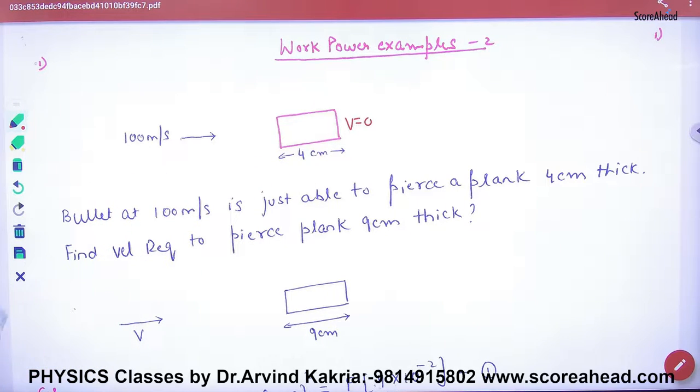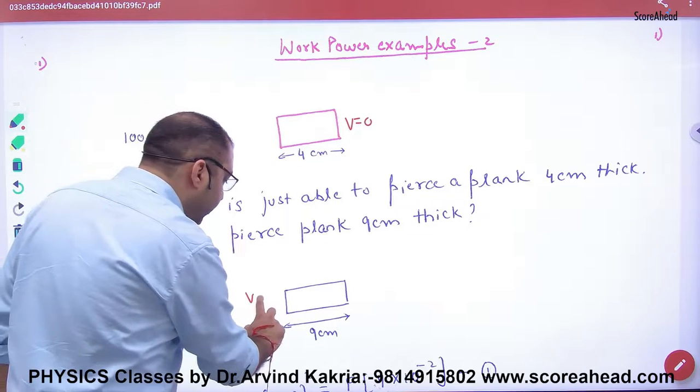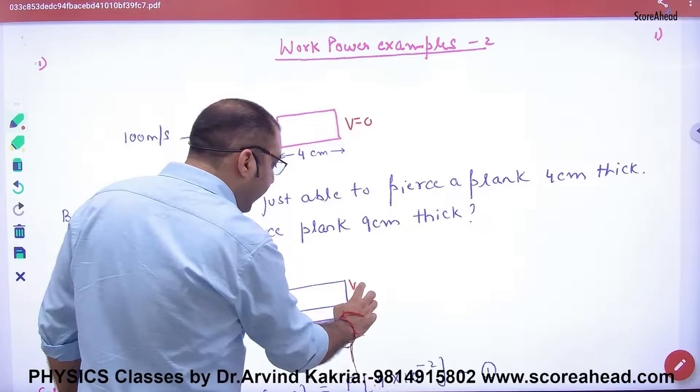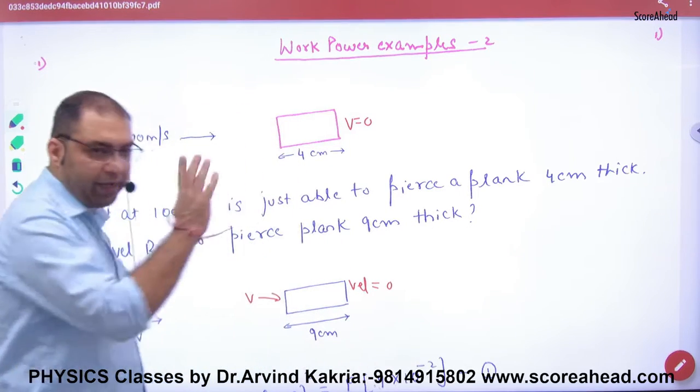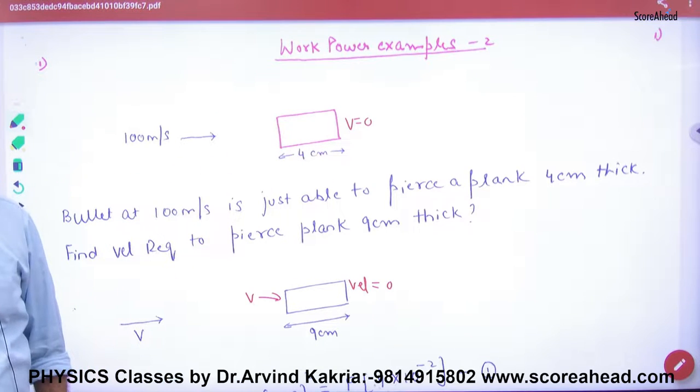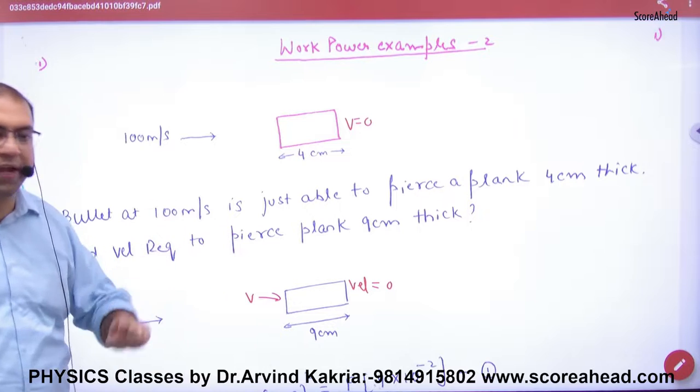Now in case number 2, the bullet will enter - how many centimeters will it enter so that it will stop in the plank? 9 centimeters. If it comes at 100 meters per second then it will stop at 4 centimeters. How many centimeters if it stops at 9? So what velocity should it enter? This is the question.